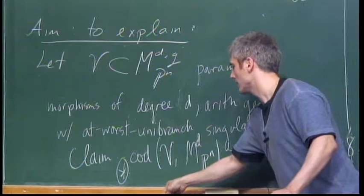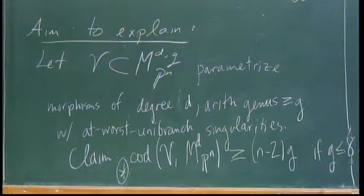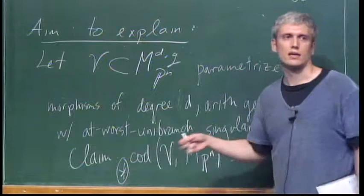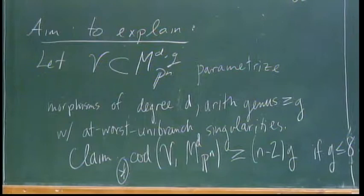In order to do that, I have to introduce several key ingredients. I could make a slightly more general statement which would also incorporate singularities with more than one branch, but it turns out that the structure already in the unibranch case is very rich. So I'm only going to concentrate on this situation.